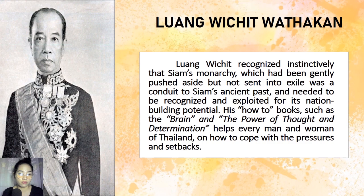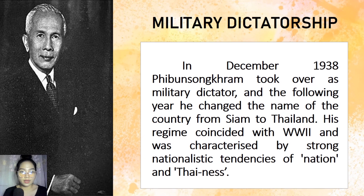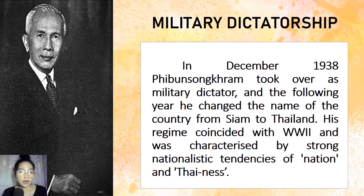In December 1938, Phibunsongkhram took over as military dictator and the following year changed the name of the country from Siam to Thailand. The change was part of his determination to bring his people into the modern world while emphasizing their unique identity. It was an anti-Chinese move with the slogan 'Thailand for the Thai.' He cut down immigration from China, set up government-backed Thai businesses, limited Mandarin in Chinese schools to two hours a week, adopted the Western calendar, created a new flag, a new national anthem, and demanded Thais wear Western-style clothes.